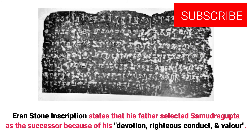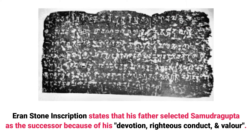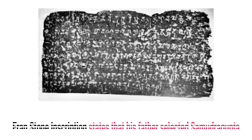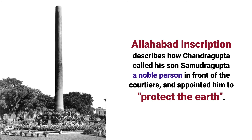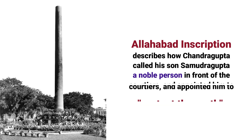The Eran stone inscription states that his father selected Samudra Gupta as the successor because of his devotion, righteous conduct, and valor. The Allahabad inscription similarly describes how Chandragupta called his son Samudra Gupta a noble person in front of the courtiers and appointed him to protect the earth.